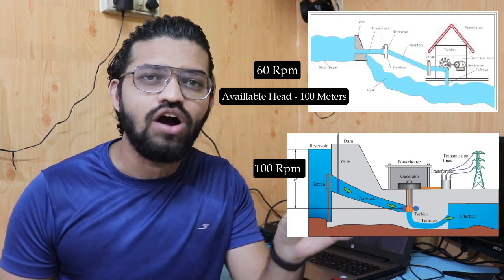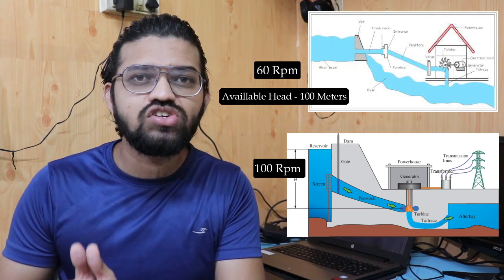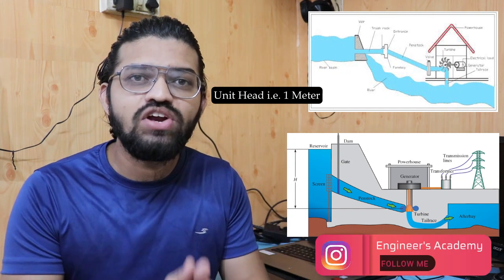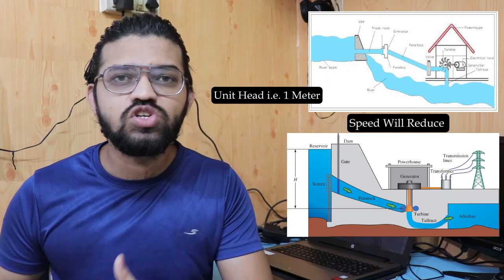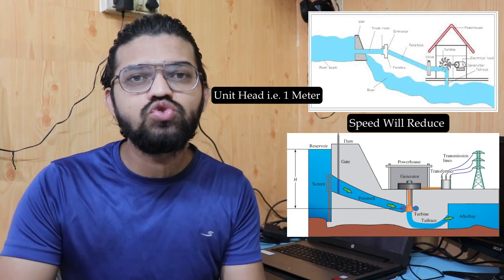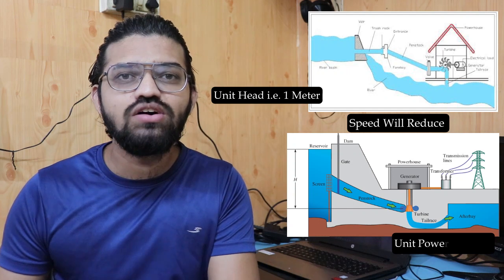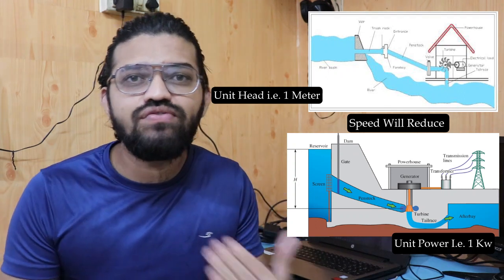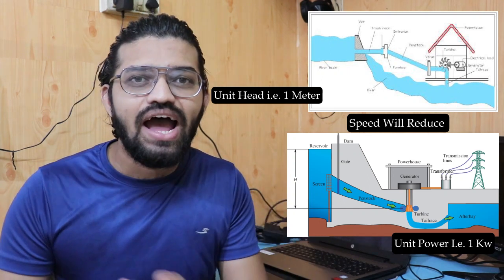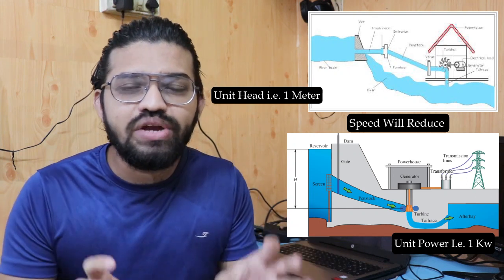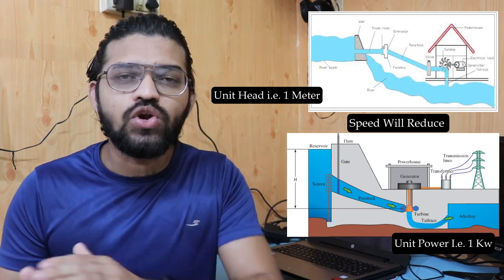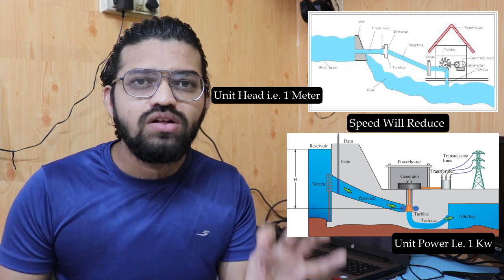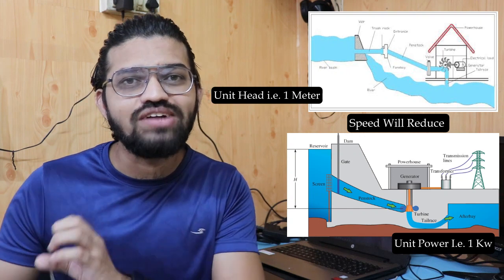Going back to the previous example: if we reduce the available head for both the Pelton wheel turbine and the Francis turbine down to unit head — that is, one meter — each turbine will rotate at a different speed. At the point where both turbines produce the same unit power output, their corresponding speeds will be different. Those different speeds, under unit head producing unit power, are termed the specific speeds of the respective turbines.